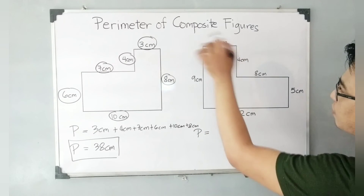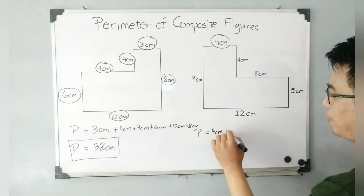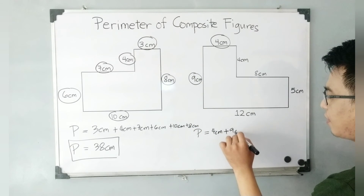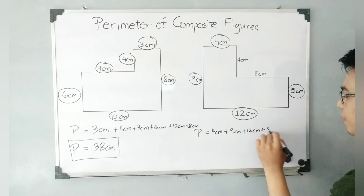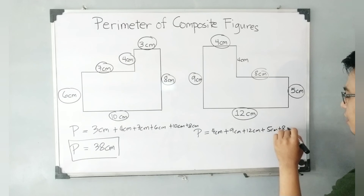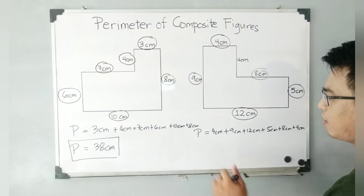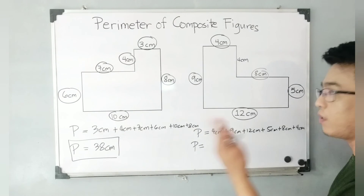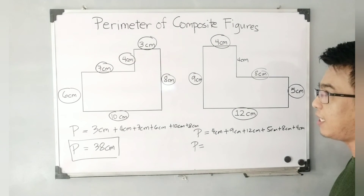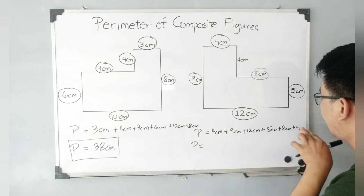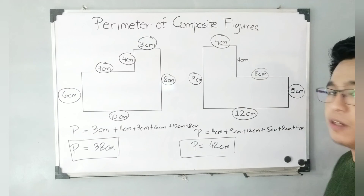The perimeter is equal to — I will start with four centimeters, plus four centimeters, plus nine centimeters, plus 12 centimeters, plus five centimeters, plus eight centimeters, and lastly four centimeters. Four centimeters plus nine centimeters gives you 13, plus 12 is 25, plus five is 30, plus eight gives you 38, plus four gives you 42 centimeters as the perimeter of this composite figure.